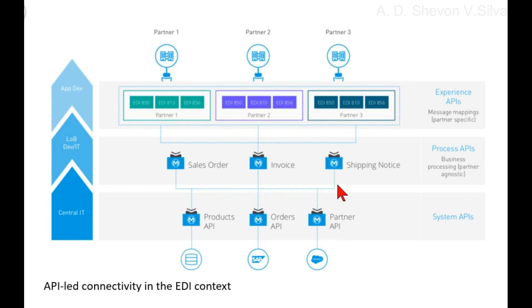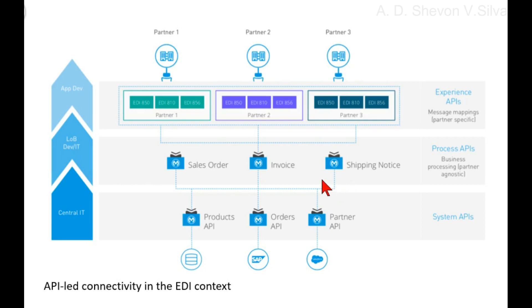The Process API layer takes core assets and combines them with business logic to create more value by aggregating data extracted from the product, order, and partner APIs. The sales order, invoice, and shipping notice APIs are created. These APIs process the purchase order, check inventory levels, and create appropriate acknowledgement notices necessary for partners.